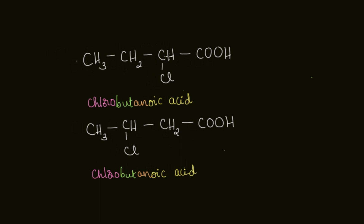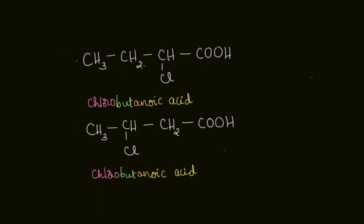If I specify the position of chlorine — to which carbon it is attached — I can differentiate between these two compounds. For example, if this chlorine is on the second carbon and that chlorine is on the third carbon, I'll be able to tell them apart. So in this video, we will learn how to number the carbon atoms in a given compound, and we'll be able to name these compounds after learning a few rules.